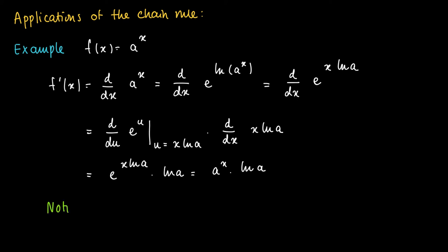So the only thing we used here is that we wrote f as a composite function, where the outer function was the exponential function, and what we used is that the derivative of the exponential function is the exponential function itself.